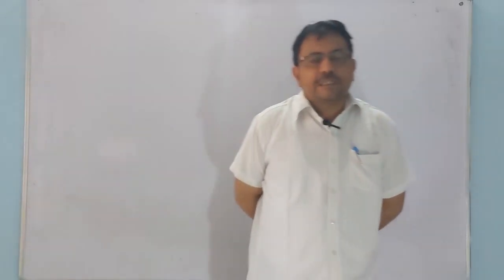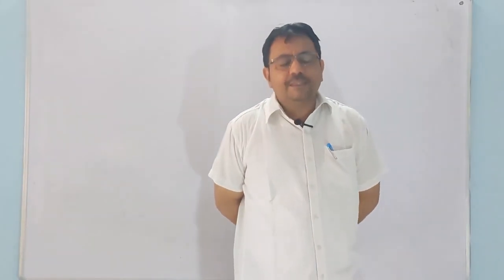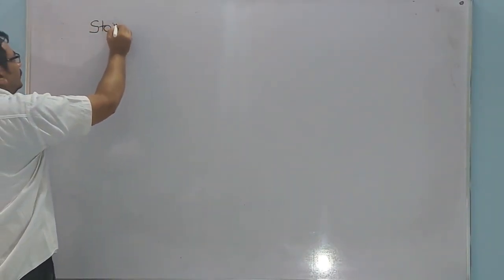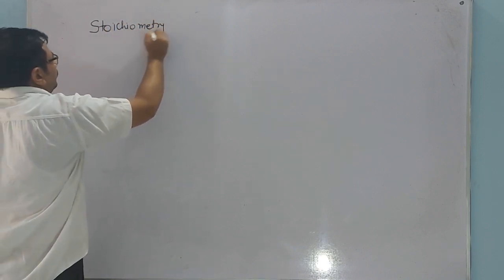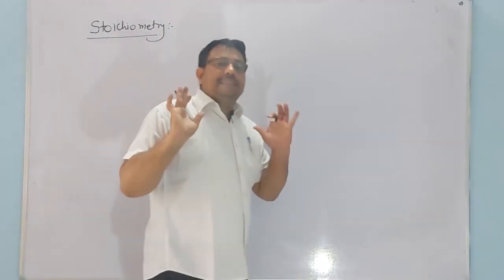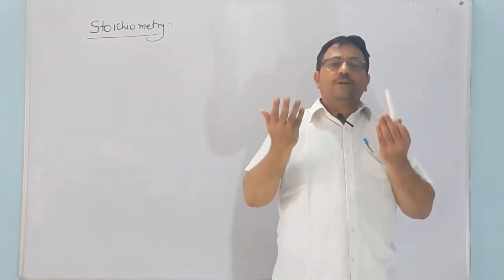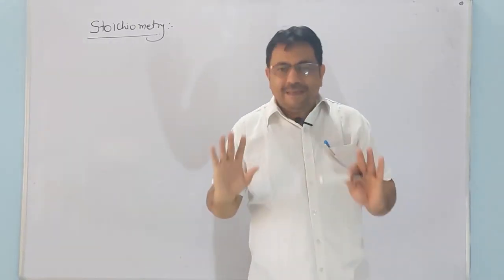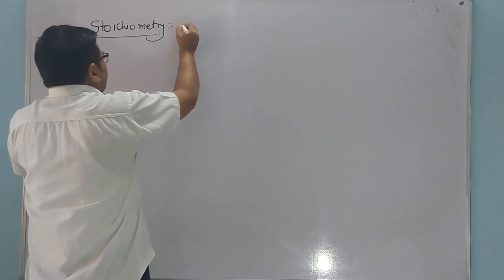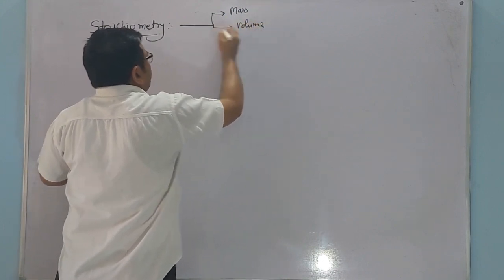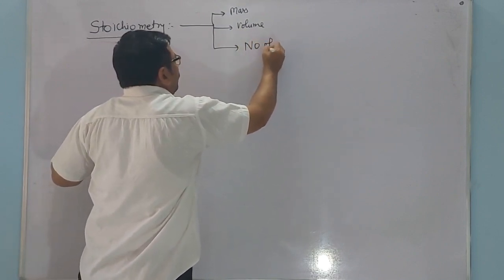Hello students, we'll discuss today stoichiometry. It is a Latin word, the meaning of which is measurement. This is the art of measurement — measurement of mass, measurement of moles, measurement of volume. Chemistry में हम measurement तीन हिस्से में कर सकते हैं: या तो किसी compound की measurement mass में, या volume में, या number of moles में।